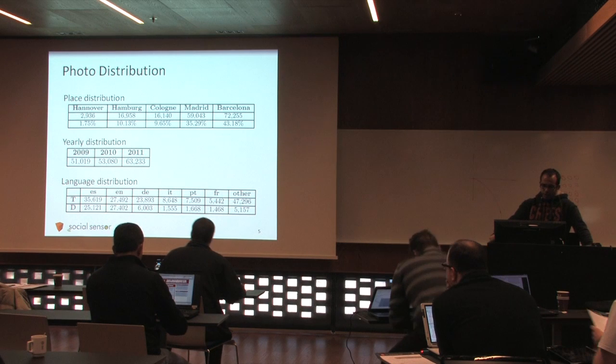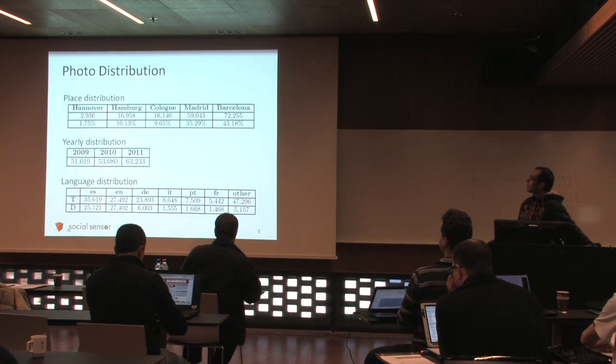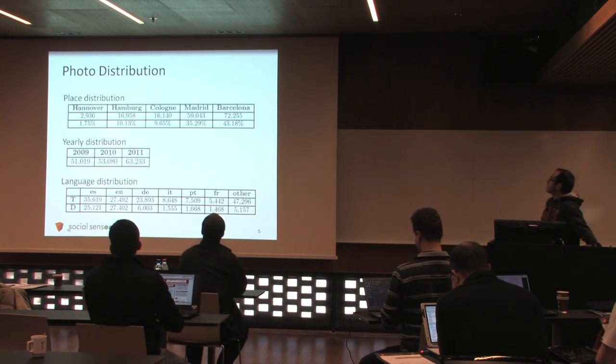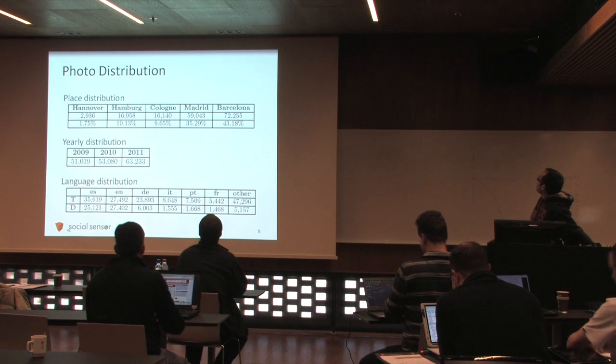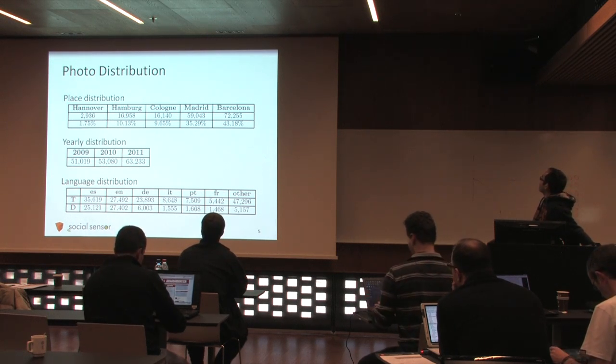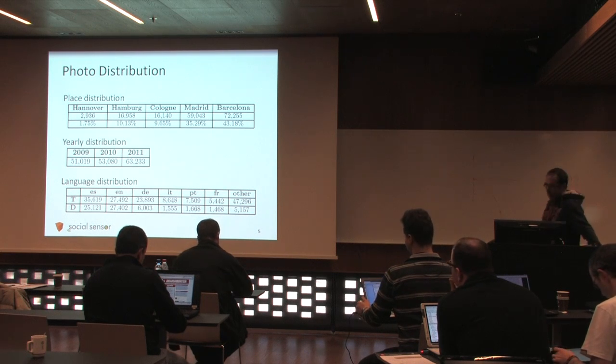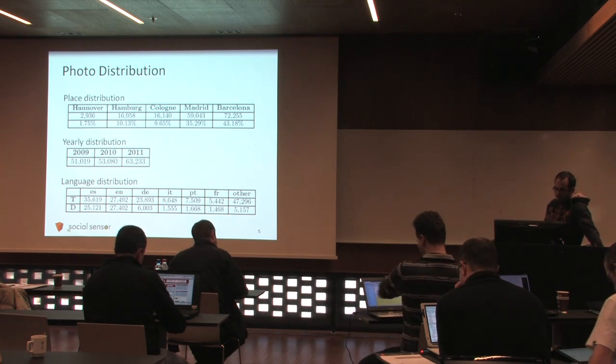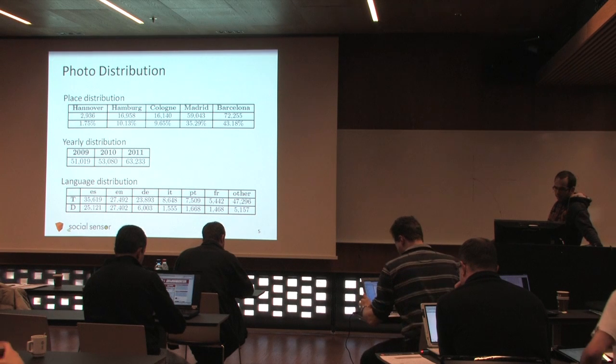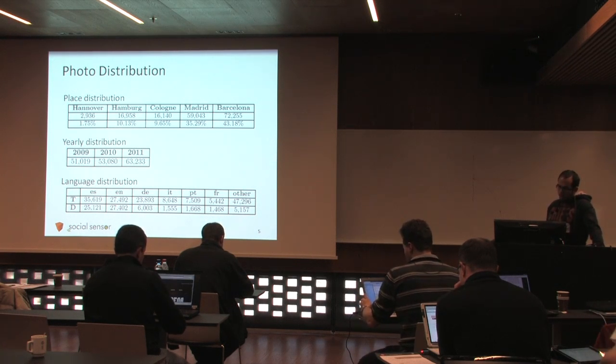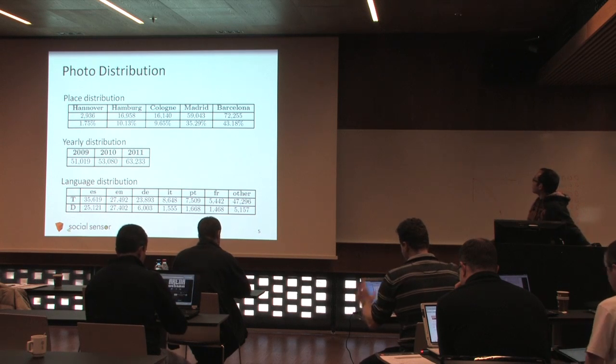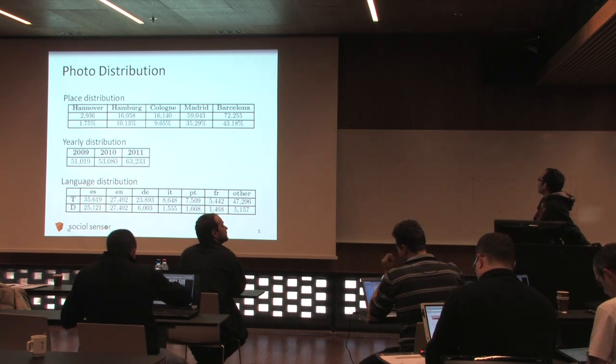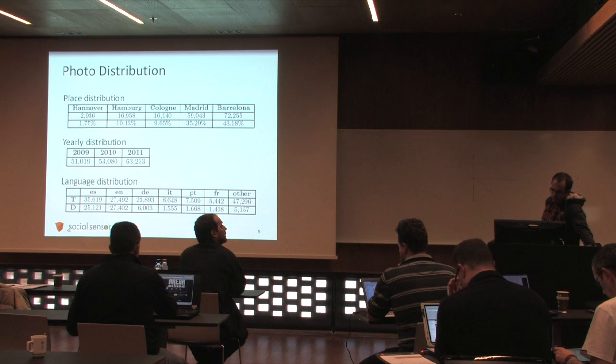The distribution of the photos is as depicted in these tables. The majority of the photos come from the two Spanish cities, and around one-fifth of them come from the three German cities. The yearly distribution is quite balanced: about 50,000 in 2009, 53,000 in 2010, and 60,000 in 2011. We also have an estimate of the language distribution by using an automatic language detection module. Based on the titles of the photos, the majority of them are in Spanish.